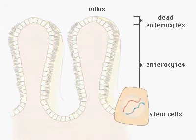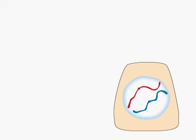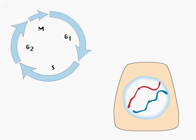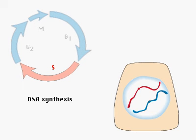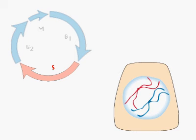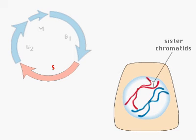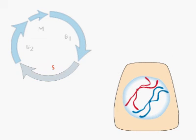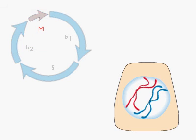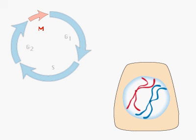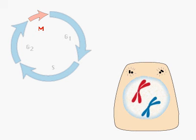The actively dividing stem cell proceeds through a sequence of phases called the cell cycle. During the synthesis or S phase, the cell's DNA is duplicated. After a G2 transition period, the cell enters the mitotic or M phase. Mitosis partitions the genome equally to opposite ends of the cell and the cell divides into two.